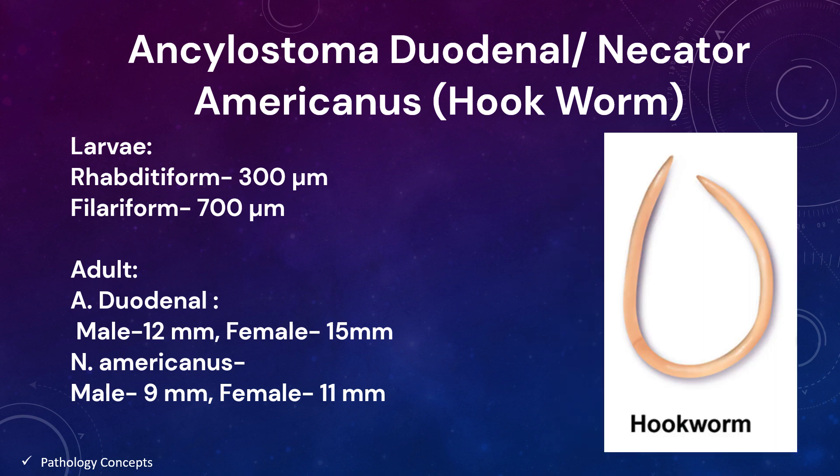Adult hookworms reside in the small intestine. Ancylostoma duodenale males measure approximately 12 mm long and females around 15 mm long. Necator americanus males measure around 9 mm long and females around 11 mm long.